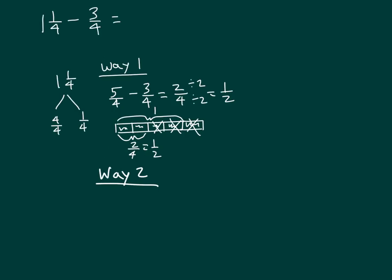For way 2, we'll start with 4 fourths. So here is our visual model for 4 fourths. And then when we had 4 fourths and we were breaking it apart, we would have had 4 fourths, and then in this case we'll subtract 3 fourths first, and then we'll add back in the 1 fourth.